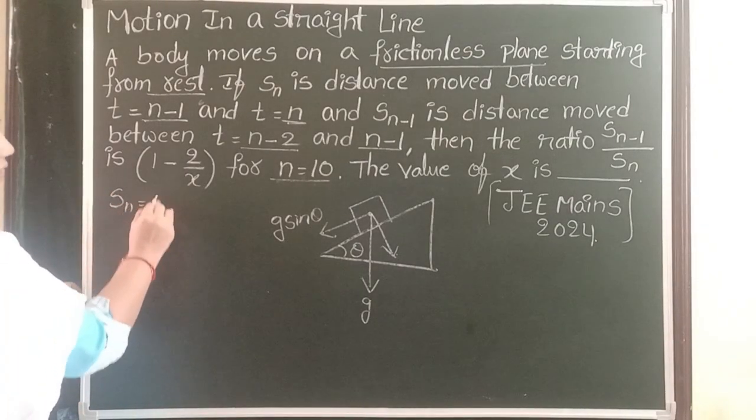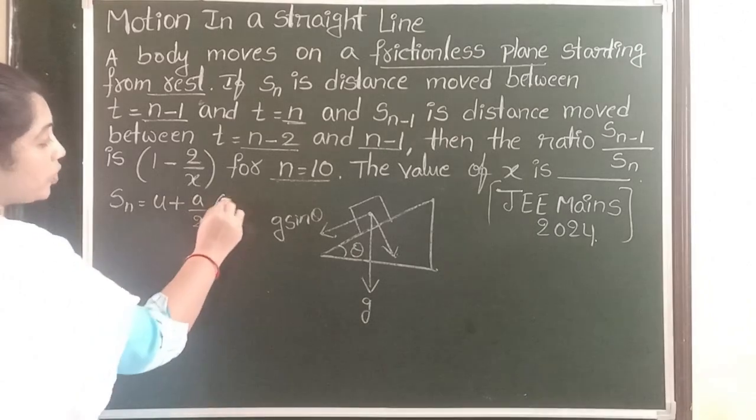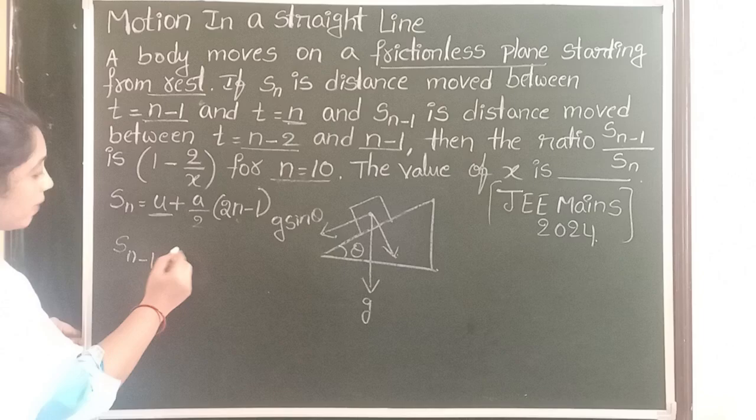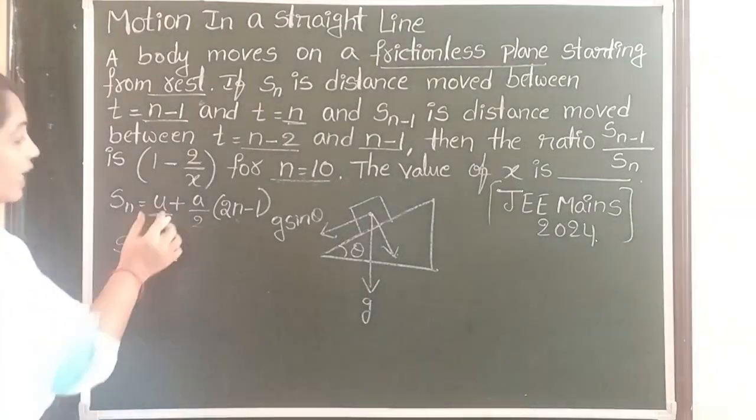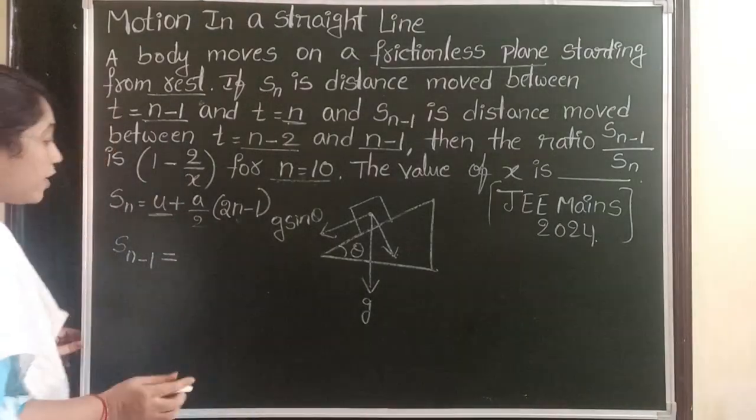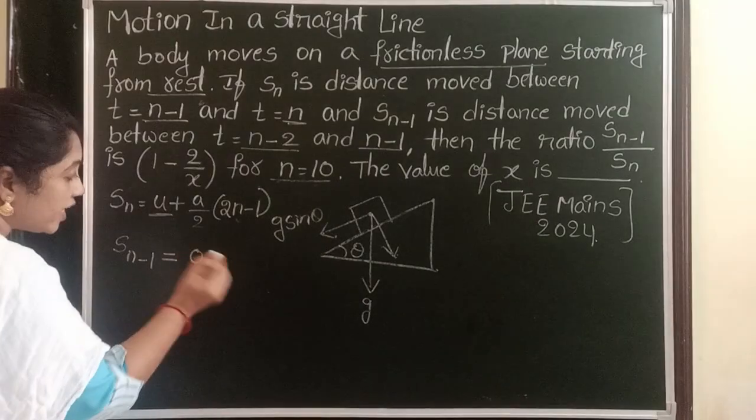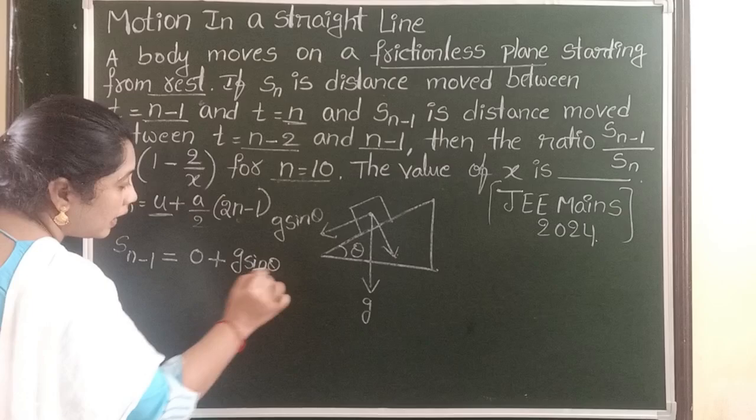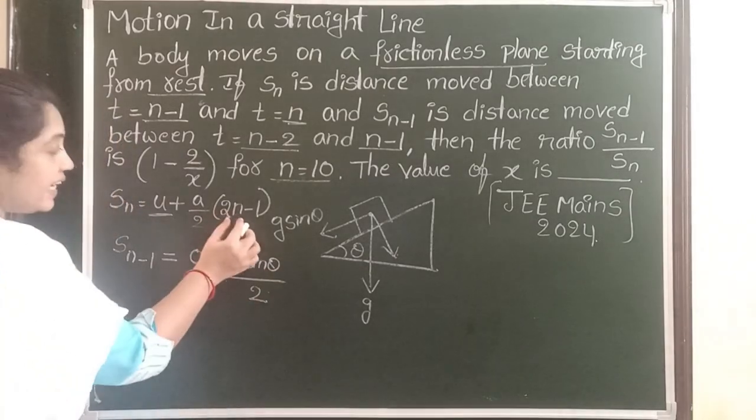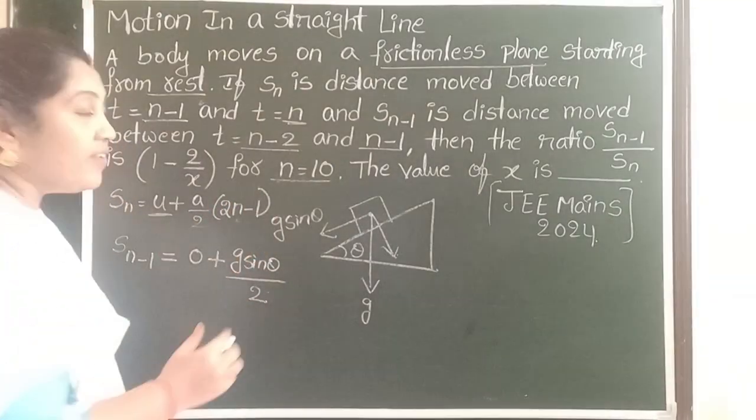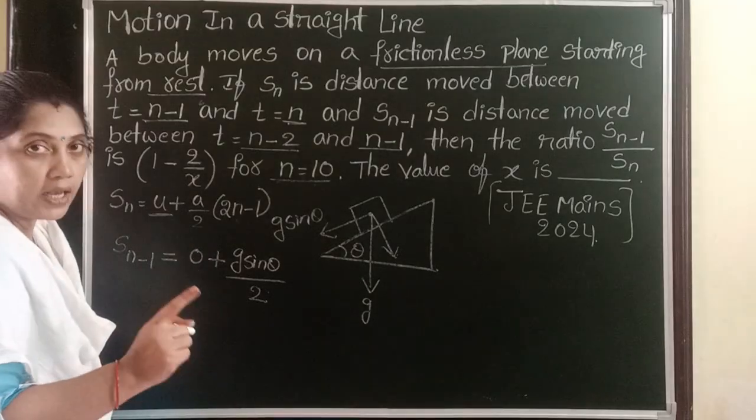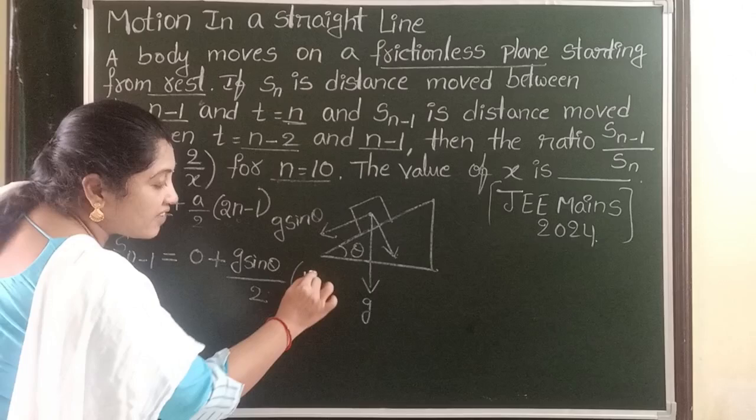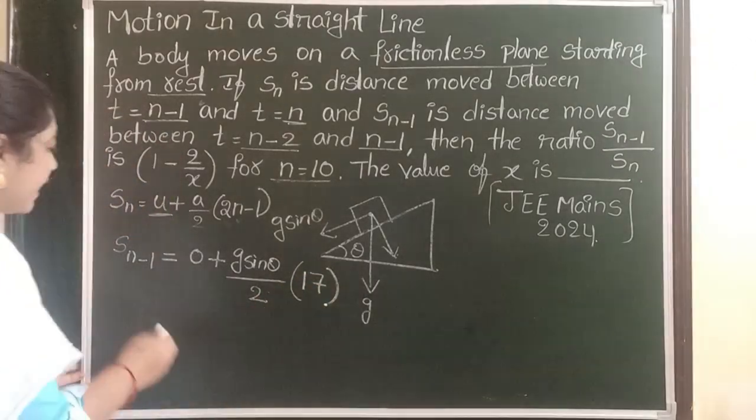Sn equals U plus A by 2 into 2n minus 1. First take Sn-1. Sn-1 equals initial velocity is 0, body is starting from rest position. 0 plus A value is G sine theta by 2. Here n is n minus 1. Given n value is 10, so 10 minus 1 becomes 9. 9 into 2 is 18, 18 minus 1 becomes 17.